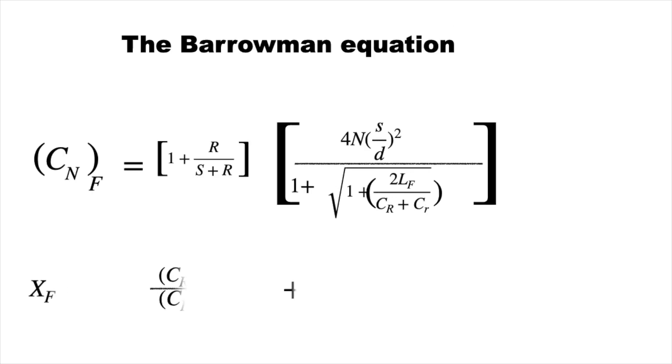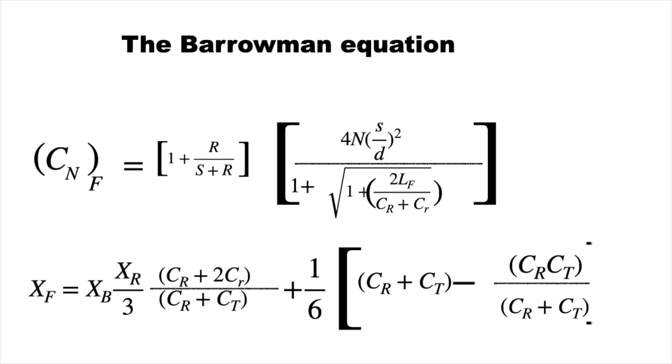Now you might want to search for how to use the Barrowman Equation. The biggest factor in the calculation of CP are the length of the rocket, the size, the shape, and the location of the fins. The purpose of having fins on the rocket is to bring back the center of pressure toward the back of the rocket.